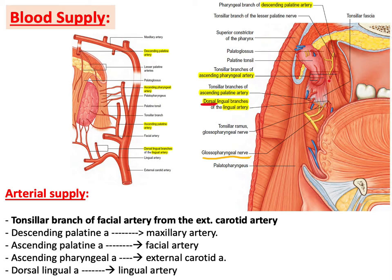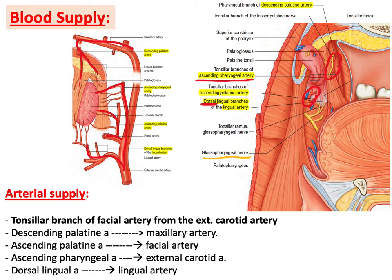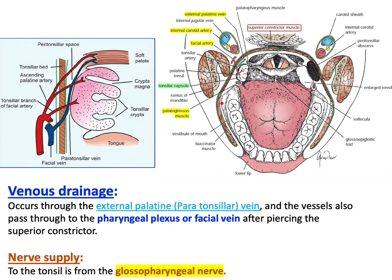To summarize the arterial origins: the descending palatine artery is a branch of the maxillary artery; the ascending palatine artery is a branch of the facial artery; the ascending pharyngeal artery is a branch of the external carotid artery itself; and the dorsal lingual artery is a branch of the lingual artery. These vessels can all be seen in the accompanying figures.